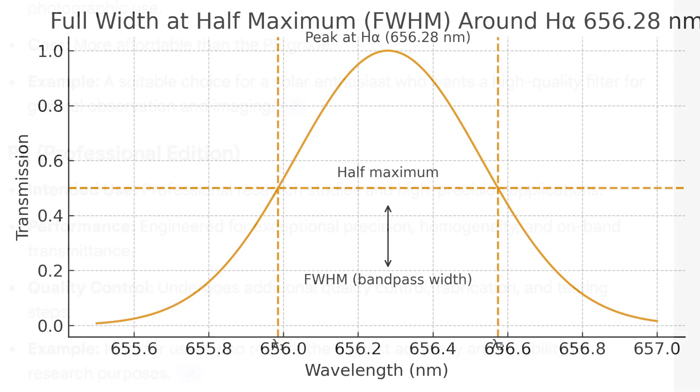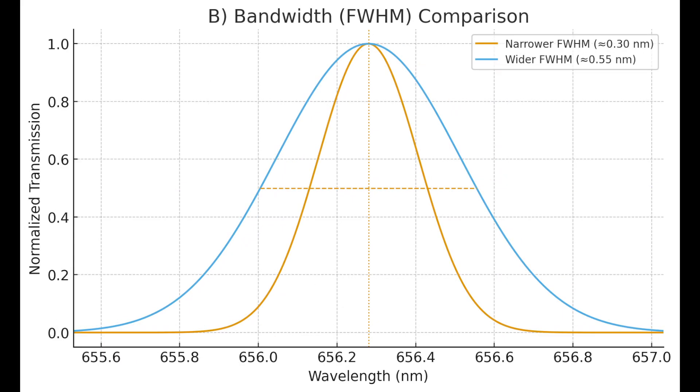Before we go further, I want to discuss FWHM, which is full width at half maximum. It measures the width of the transmission curve at 50% of its maximum height. A smaller FWHM gives you a narrower bandpass and higher contrast. A larger FWHM gives you a wider bandpass and lower contrast. This will matter a lot when we compare the two systems.